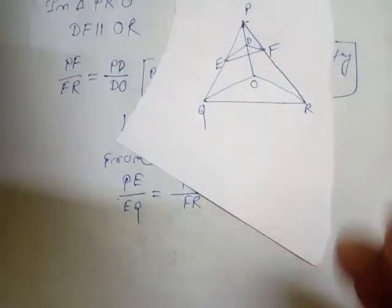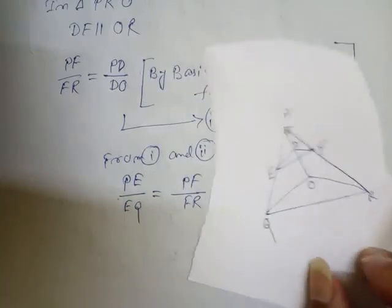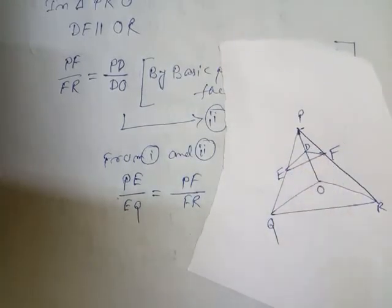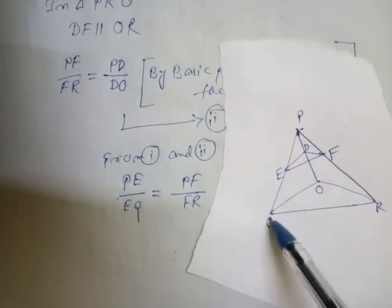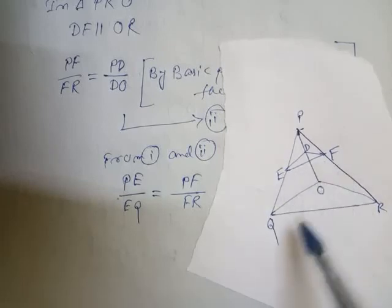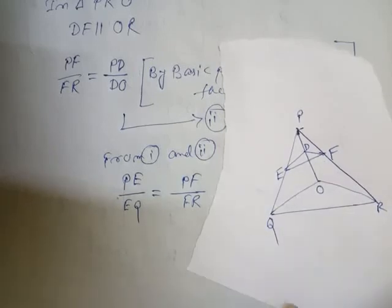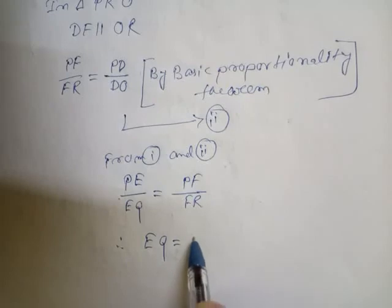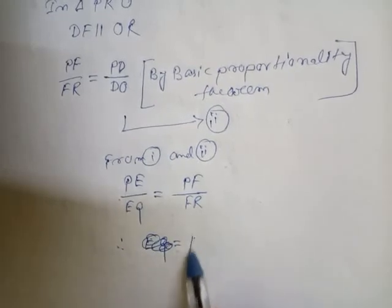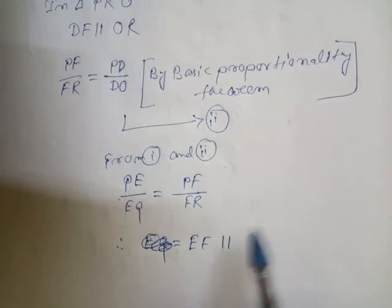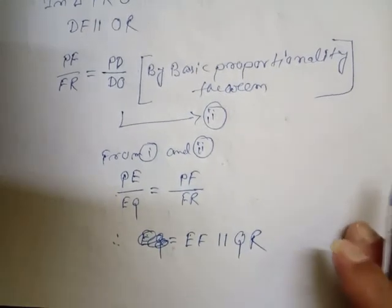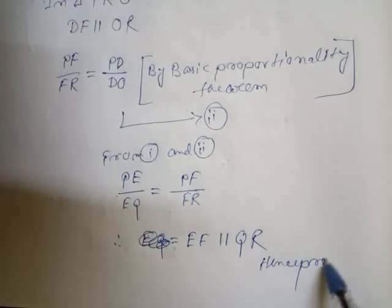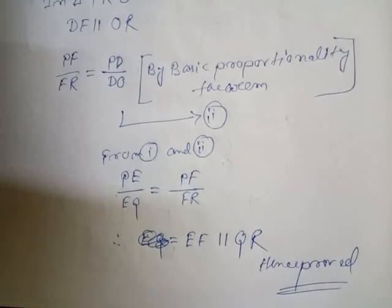Look in the diagram — we have PE by EQ and PF by FR. As you can see, PE by EQ equals PF by FR. This is possible only when EF is parallel to QR. So this is our proof. Hence proved. Question number 5 — done.